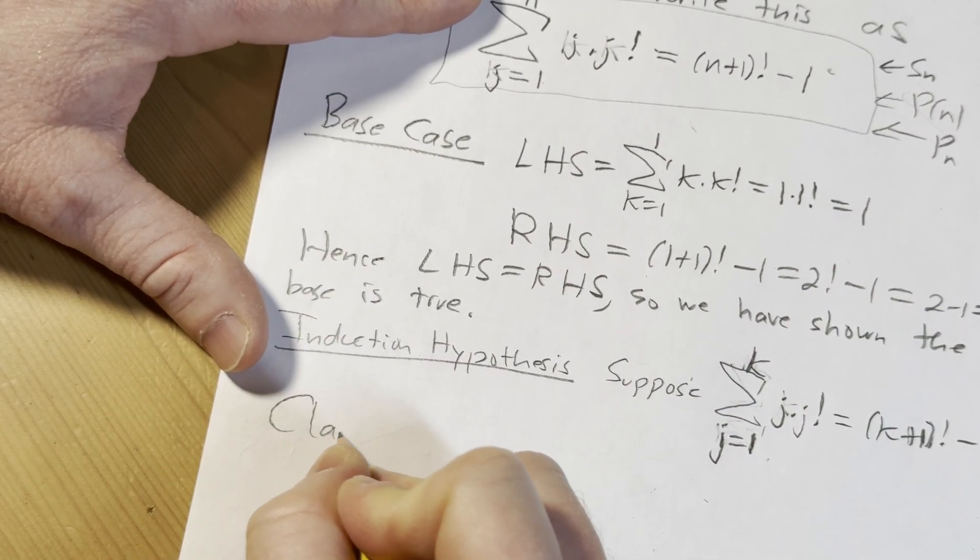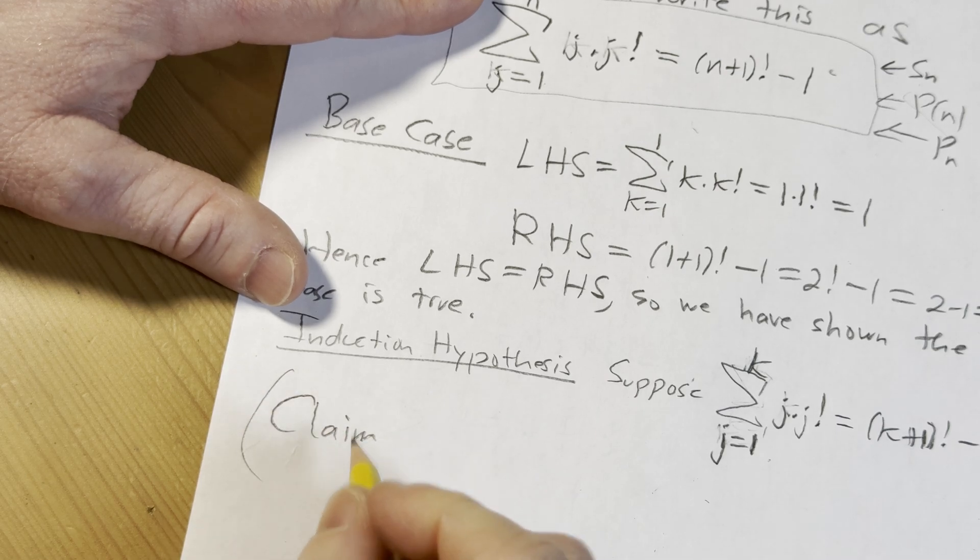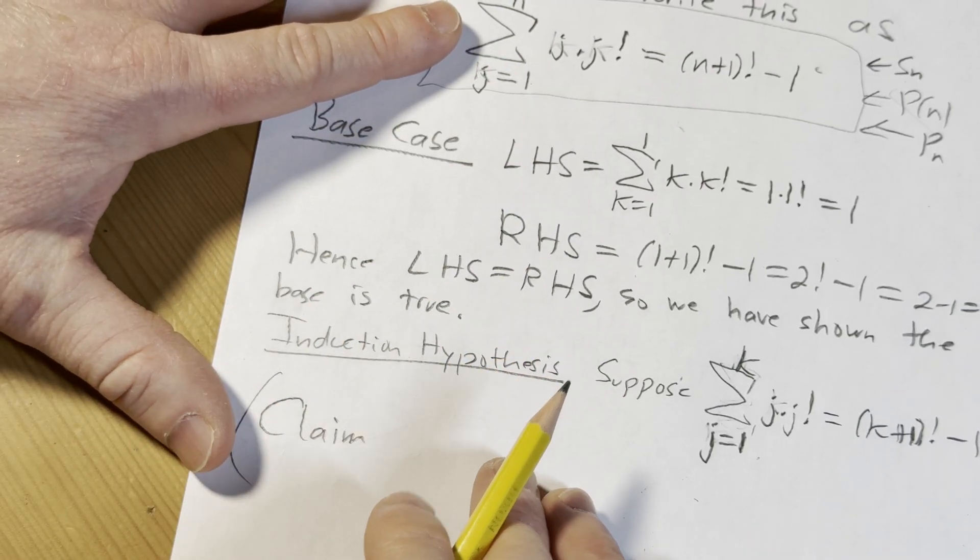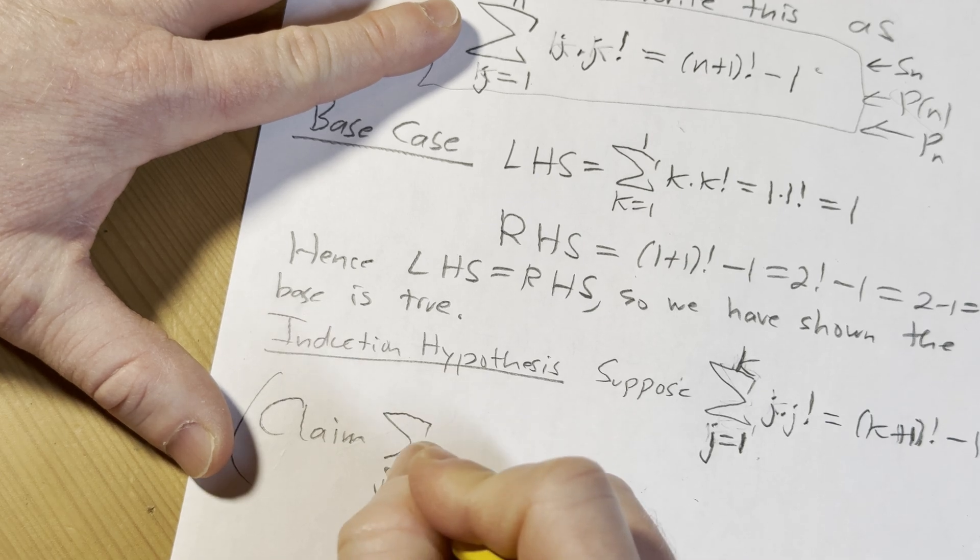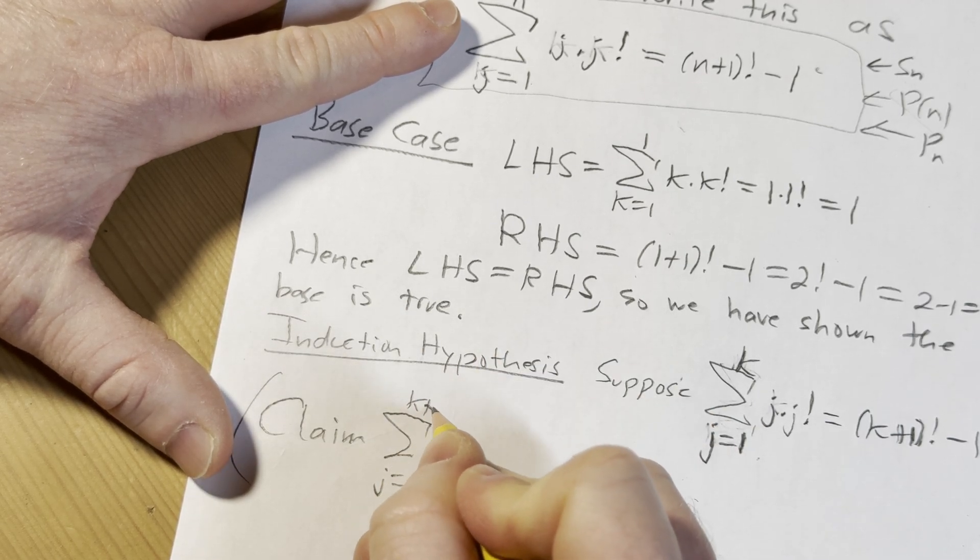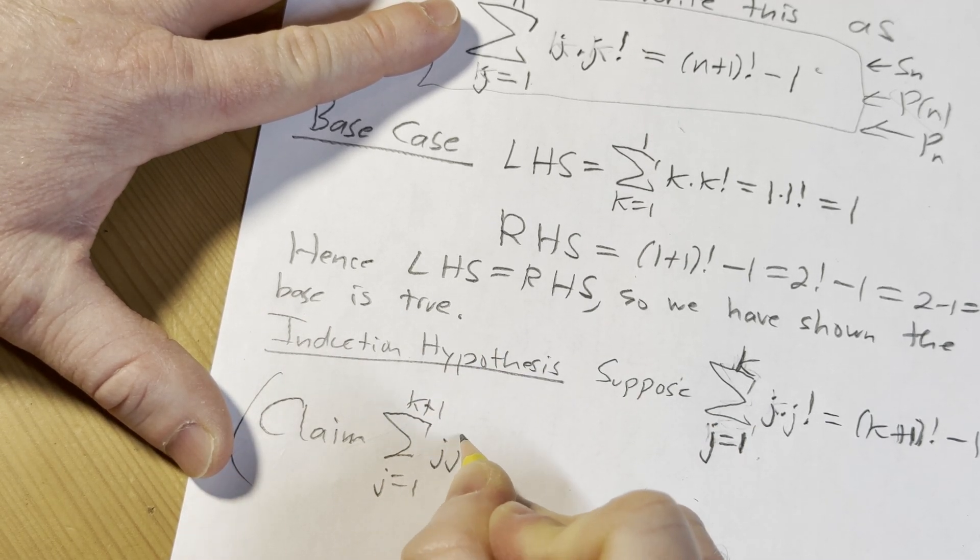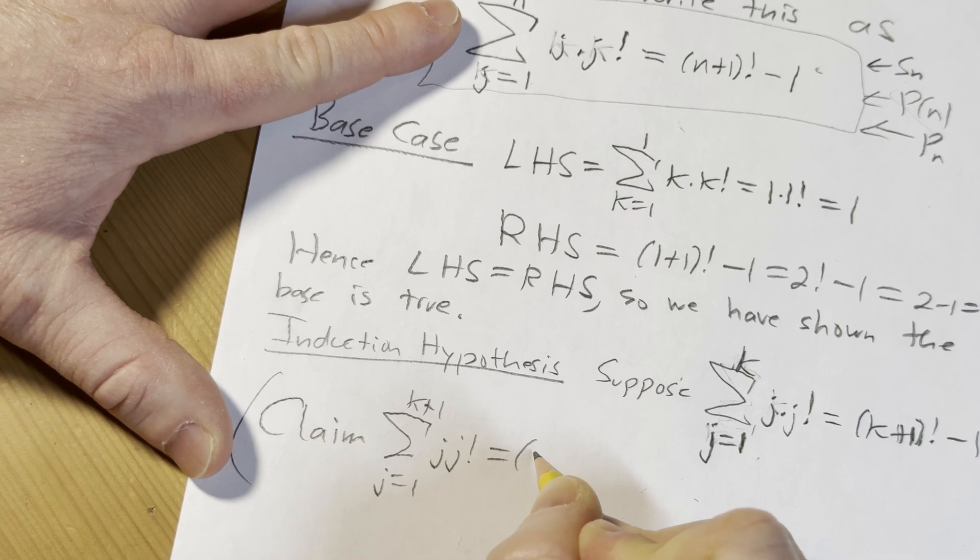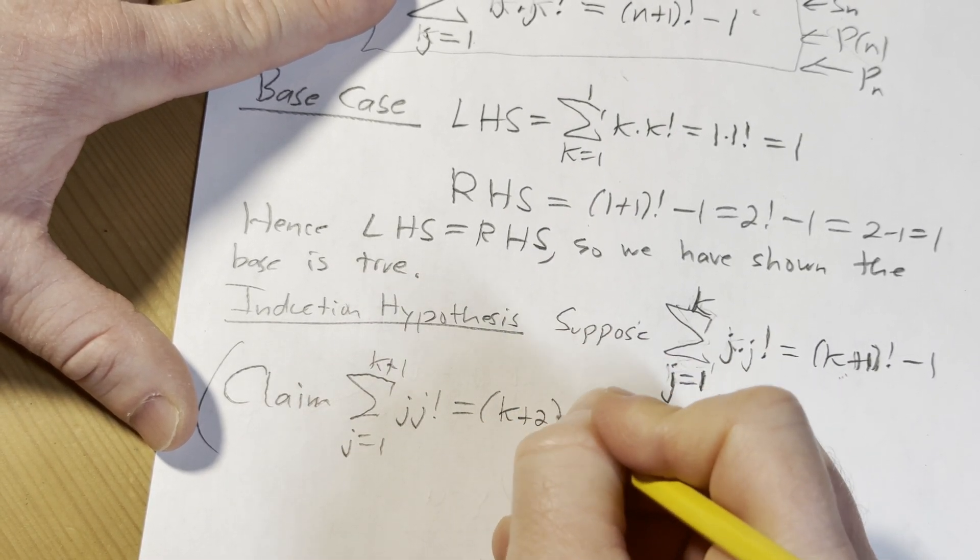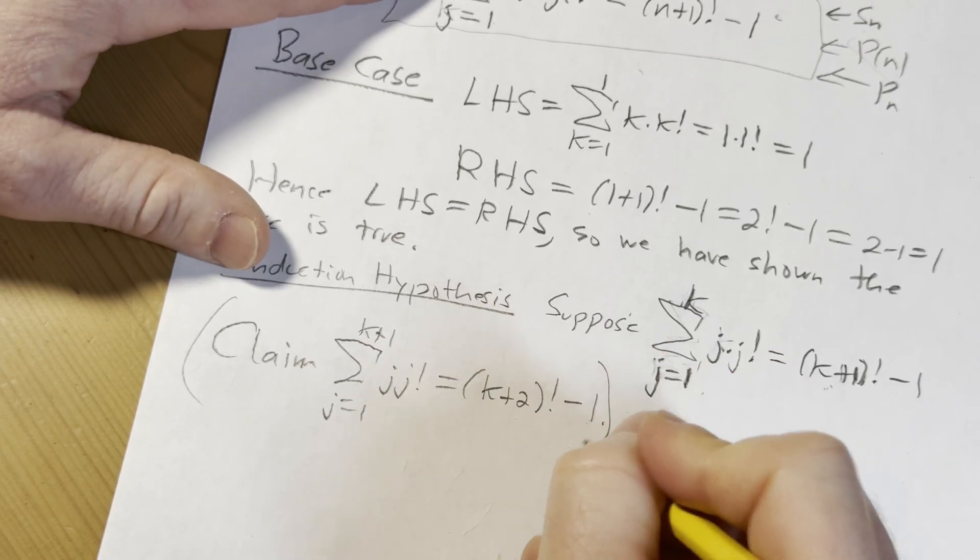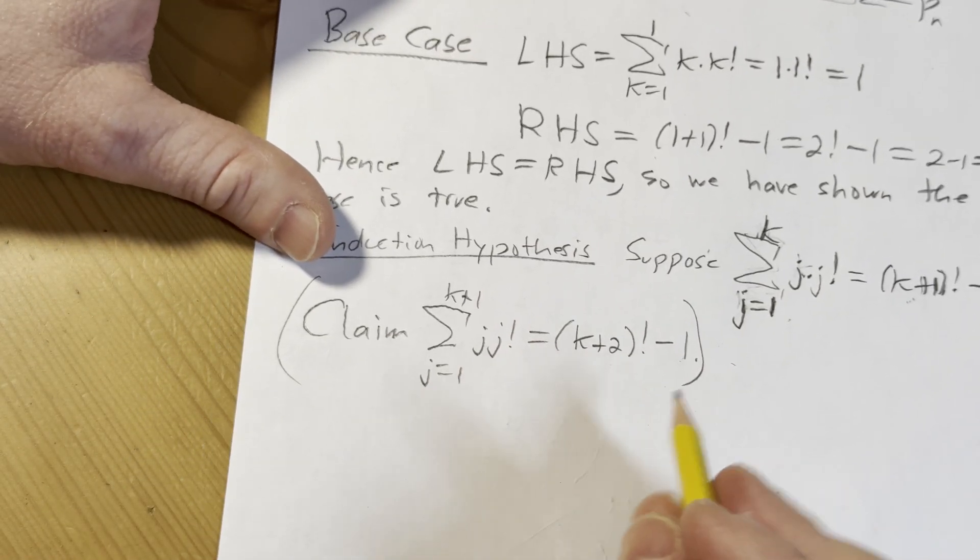All right, the claim, and this is what we have to prove, so I'm going to put it in parentheses. The claim is that this is true for k plus 1. So the claim is that if we start at 1, go to k plus 1, j, j factorial, this will be k plus 1 plus 1, so it'll be k plus 2. Okay, that's the claim.